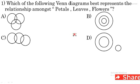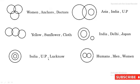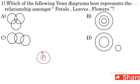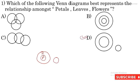Question 1: Which of the following Venn diagram best represents the relationship amongst petals, leaves and flowers? Jo flowers hai, usi mein petals hote hai. So the big circle is flower and the inner circle is petals. But leaves are a totally different part of the plant, so leaves can be represented as a separate circle. So D option is the right option for this question.